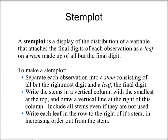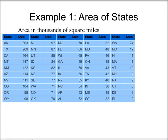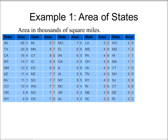So let's go through an example. We're looking at the area of states, and here I've given the area in thousands of square miles. The first step in making my stem plot is to separate each observation into a stem and a leaf. I want to break off the final digit of each observation from the rest of the digits, and I'm just going to draw a line in each column to do that. For states where I just had a single digit area, I've put some zeros to the left for their stems.